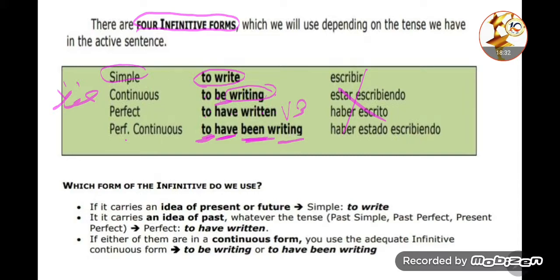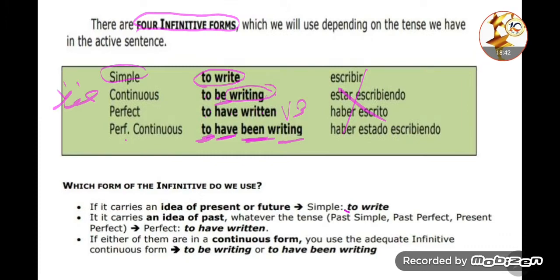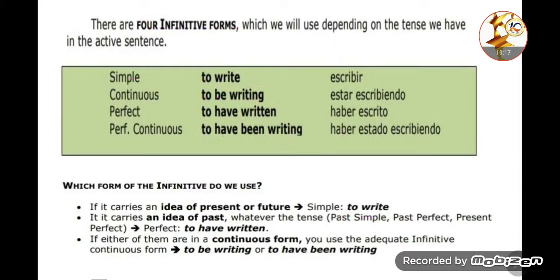Which form of the infinitive do we use if it carries an idea of a present or future? We use 'to write'. If present perfect — 'to have written'. If continuous — 'to be writing'. If perfect continuous — 'to have been writing', exactly like the table.